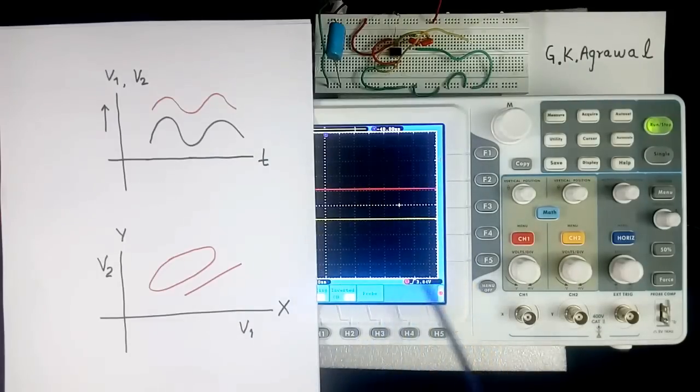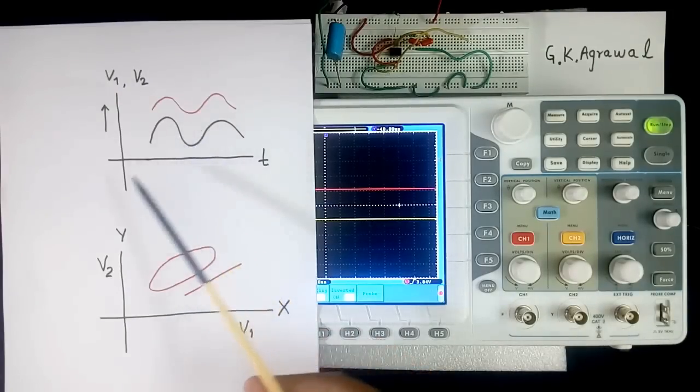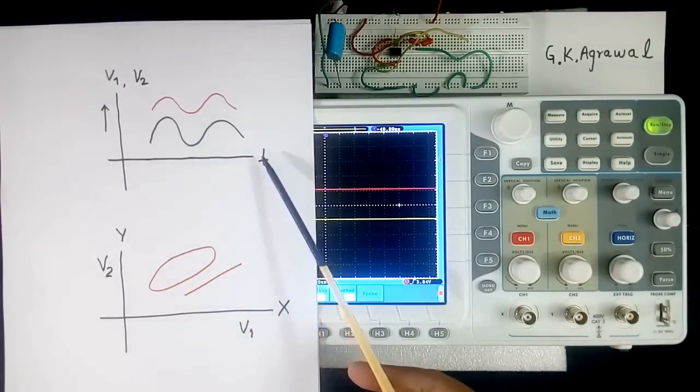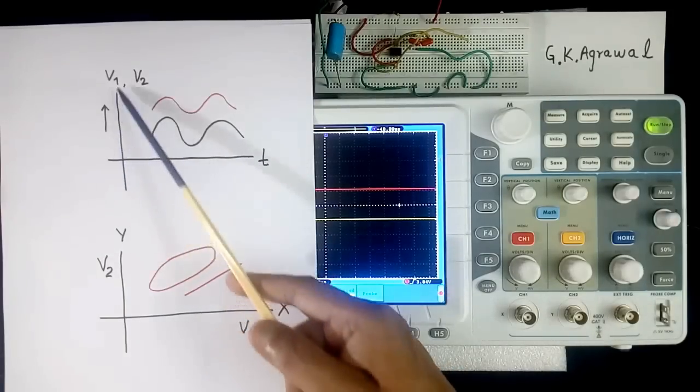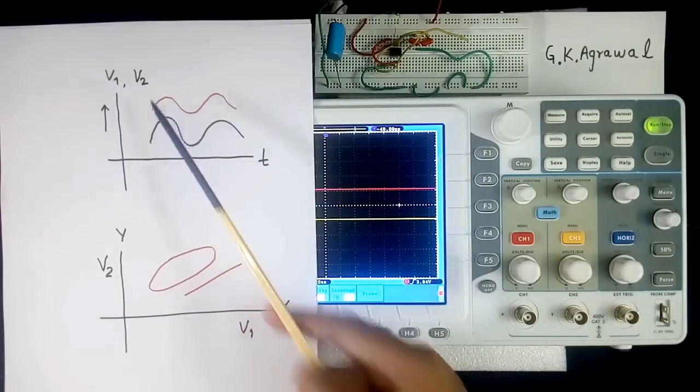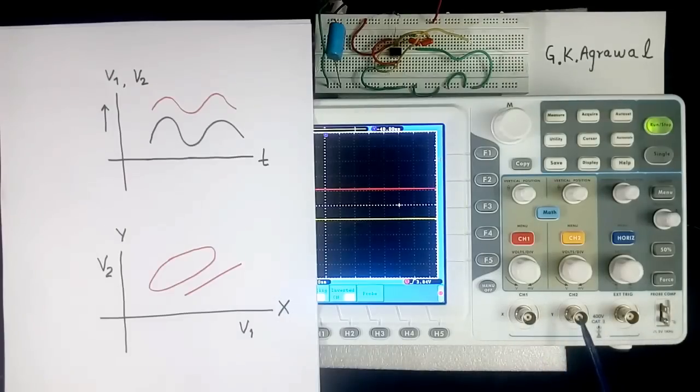Now CRO display or function can be used in 2 ways. This is 1 way. This is another way. In this way, this X axis is considered time. And Y axis is 2 voltage. V1 and V2. V1 here. V2 here.